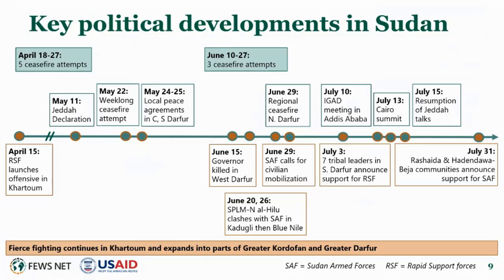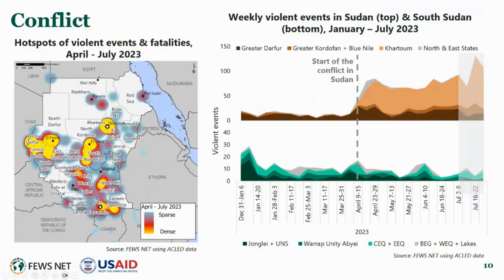Several community leaders in the East have announced support for SAF, and SAF has called for mobilization of volunteers with training camps reportedly established. In South Kordofan, parts of West Kordofan, and Blue Nile, SPLM North led by Al-Hilu has continued to carve out its own territorial control. Overall, the conflict in Sudan has remained largely focused on strategic control over urban centers and trade routes. A map on the left shows hot spots of violent events accounting for both number of events and number of fatalities between April and end of July, alongside a weekly perspective of violent events since the beginning of the year.